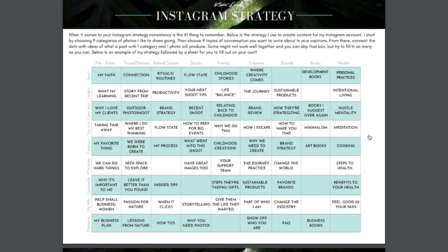Once I have these written out, I go through the grids and pair visual themes with caption themes to come up with post ideas. For example, pairing 'you time' with 'travel and nature' — I might talk about where I do my best thinking, how I get outside of myself to get new ideas. Or pairing 'sustainability' with 'health' — talking about the benefits of living sustainably, not using plastic, choosing wholesome ingredients from the earth.